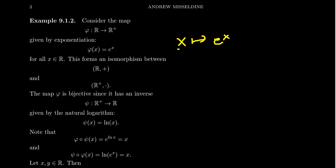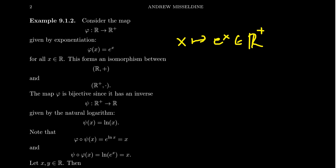Convince yourself this is a well-defined map. For every x, there's only one e to the x we could associate to it, and for any real number x, e to the x is a positive number — so it lands inside ℝ⁺. This gives a well-defined function between the real numbers and the positive real numbers. The natural exponential map is a bijection because it has an inverse: the natural logarithm. Take psi of x to be the natural log of x.